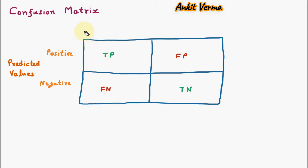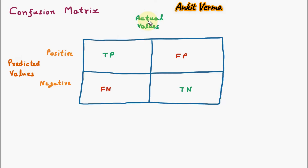The other side of the confusion matrix is actual values. These are the real facts. Actual means which are in the real sense. The actual values can be positive and negative.